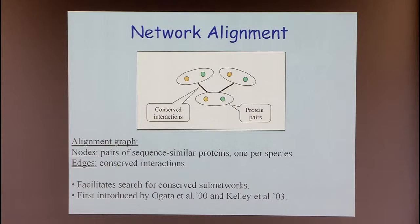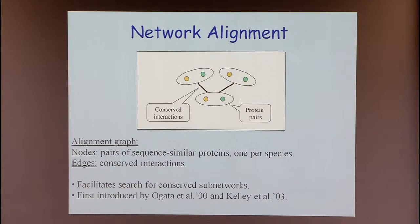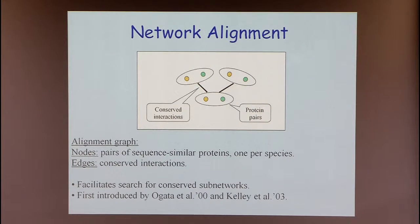Each edge in the network alignment graph corresponds to a conserved interaction. It doesn't necessarily mean a direct interaction between corresponding proteins in both species — in one species there may be a direct physical interaction, while in the other there may not be a direct interaction but perhaps a path between them. This structure was first used in a metabolic-oriented work by Ogata et al. in 2000, and later by many others as a convenient data structure for finding conserved subnetworks.